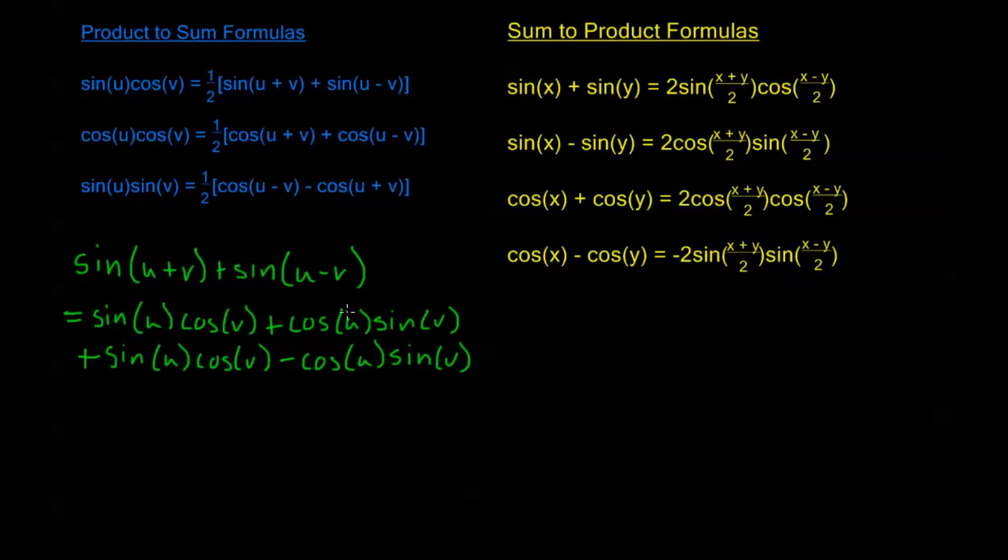which is sine of u cosine v minus cosine u sine v. So we see here, the cosine u sine v's cancel out, and we get that 2 times sine of u cosine of v, because there's two of these, so they're exactly the same thing. This is equal to sine of u plus v plus sine of u minus v.